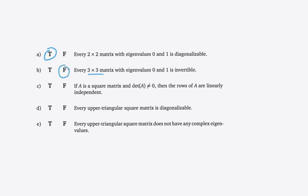It would be true if there were a 'not' in the statement: 'every 3x3 matrix with eigenvalues 0 and 1 is not invertible' — that would be true. But as written, we circle false.